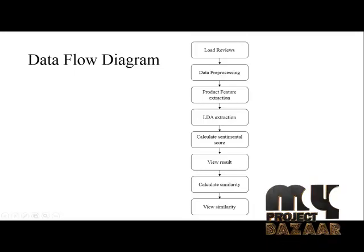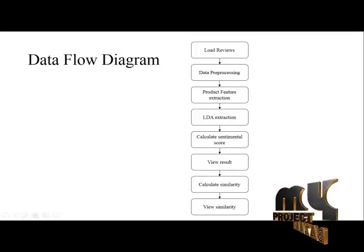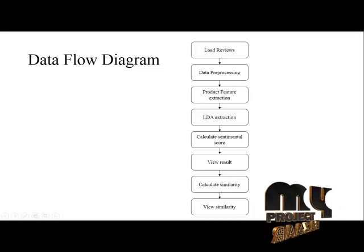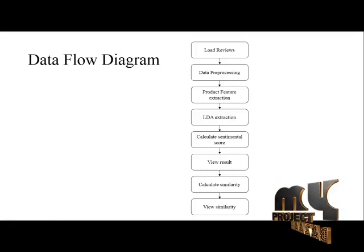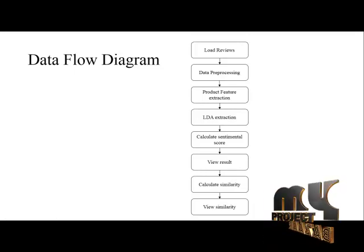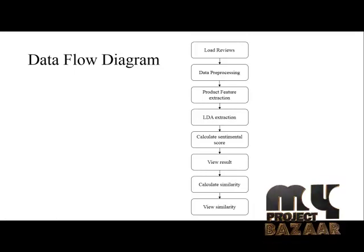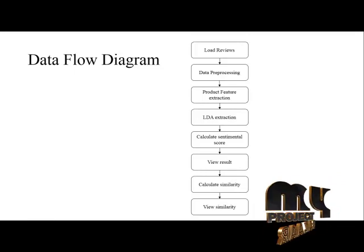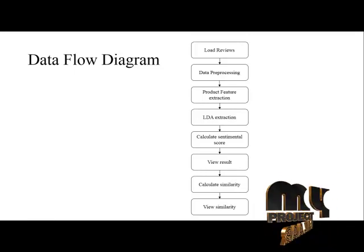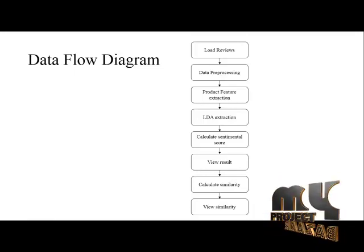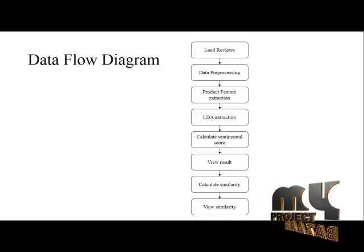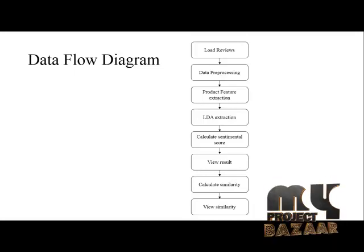After that, we have to get the similarities like the interpersonal similarity, item variance similarity, and customer variance similarity — these are calculated here. After viewing the similarities, we then find the recommendation and predict the rating of the product.